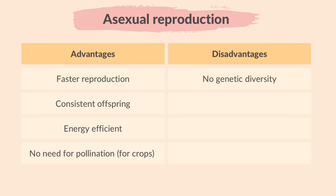The disadvantages are: there is no genetic diversity in the population, because asexual reproduction produces genetically identical offspring. This can be problematic in a changing environment because the population may not be able to adapt to new conditions. This also makes them vulnerable to disease — a disease or parasite that affects one individual can quickly spread to the entire population, causing significant damage.